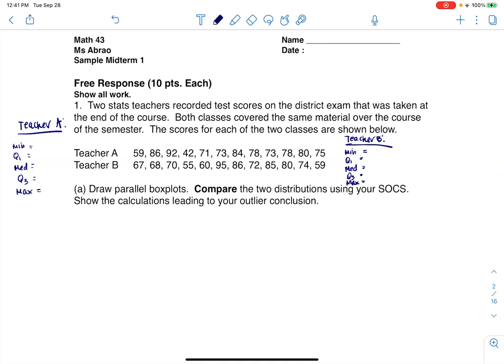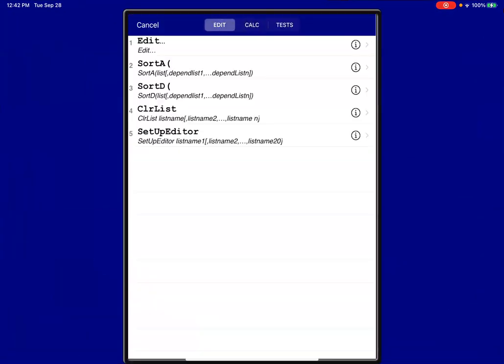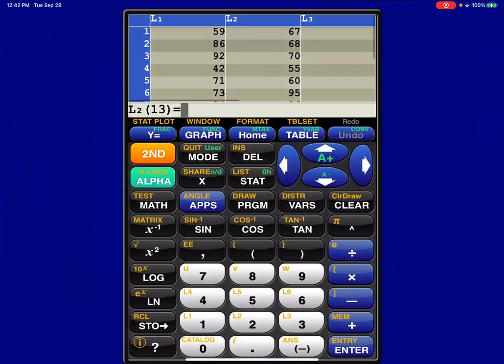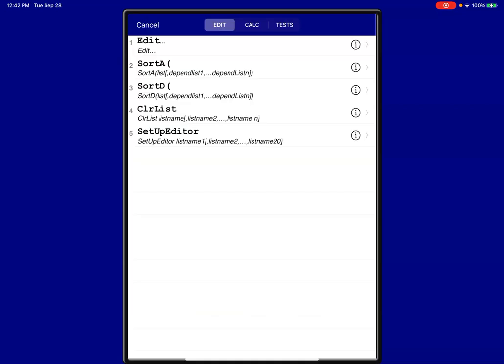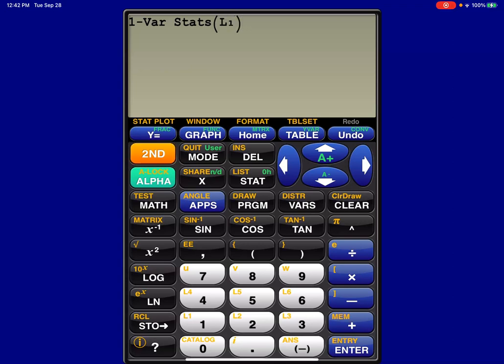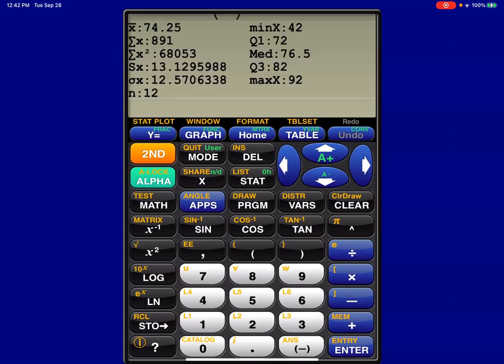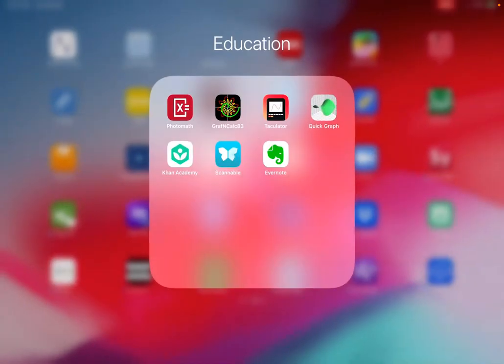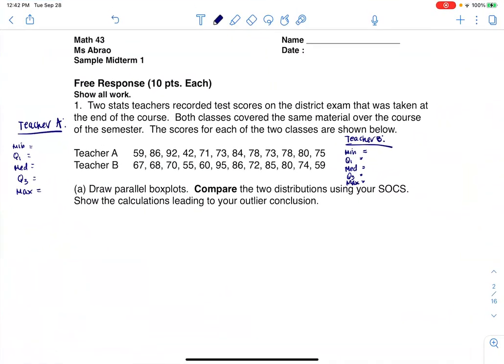Ahead of time, I put my data into my list, and I'm going to use the calculator app for this, but it's pretty similar to the physical calculator. You can see I put my data into L1 and L2. Let me get the stats for L1 - stat, calc, one-var stats. There are my five numbers: min was 42, Q1 was 72, median was 76.5, Q3 was 82, and max was 92. Let me write those in my notes.